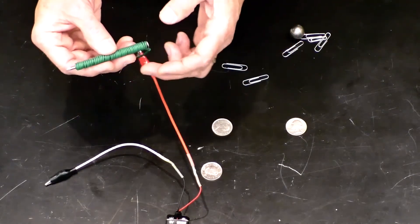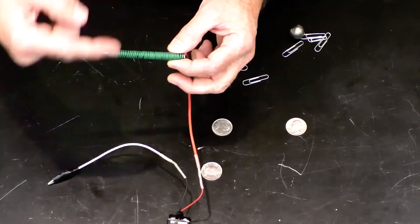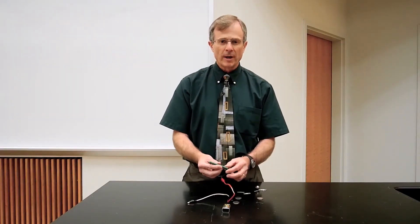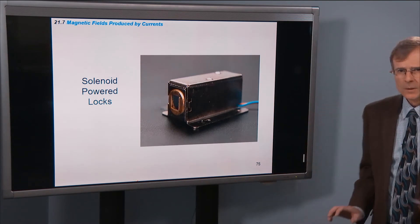This is an example of a solenoid, which is cylindrical windings of wire around a cylinder.